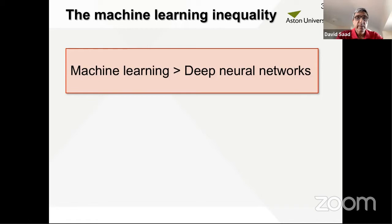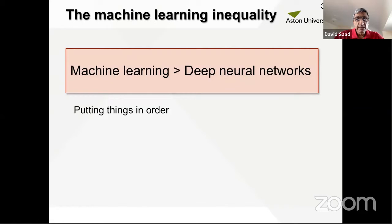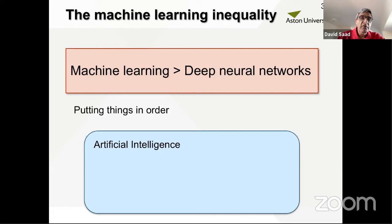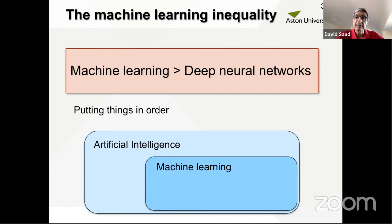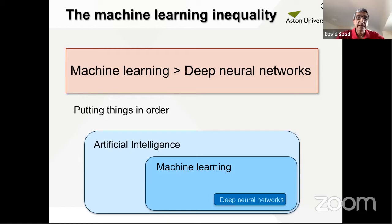My first point is that machine learning is not deep neural networks. Deep neural networks are a subset of machine learning. The broader area of machines doing intelligent things is called artificial intelligence, which includes rule-based systems and expert systems. Within AI, there is a subset of data-driven methods. The uniqueness of machine learning is that you are not a priori defining the rules; they are data-driven — you learn the rules from the data. Within machine learning, there is a smaller area called neural networks or deep neural networks, which has become very popular recently.